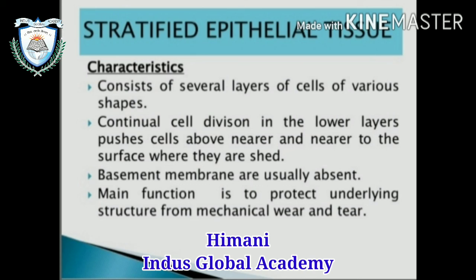Now, stratified epithelial tissue. Characteristics: it consists of several layers of cells of various shapes. Continuous division of cells in the lower layer pushes cells upward; they come closer to the surface and are eventually shed. Basement membranes are usually absent. The main function is to protect the underlying structure from mechanical wearing and tearing.